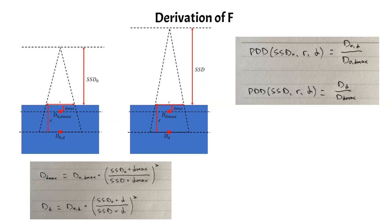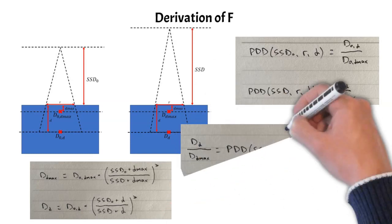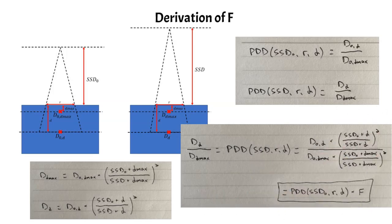So now that we have these relations, we can simply divide the bottom equation by the top equation. And what that's going to do is just give us the definition of the PDD at that new SSD, and you can see that D knot at a depth D divided by D knot at D max is simply the definition of the PDD for SSD knot. And then the other terms, actually, that's the definition of the Maynard F factor that we saw previously. So if you actually carried out this division by fractions, you would get the exact same thing that we saw previously for the definition of the Maynard F factor. So this is just an example of how we can convert one PDD at one SSD to another at another SSD using that Maynard F factor.